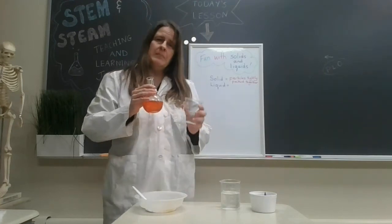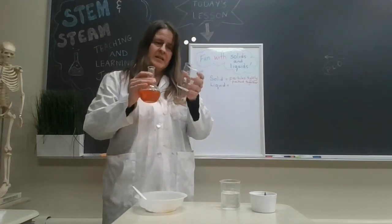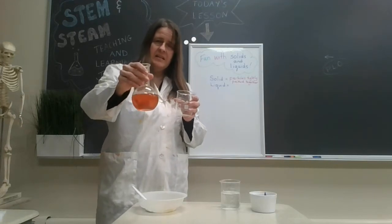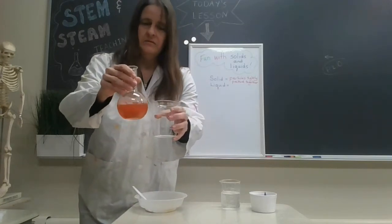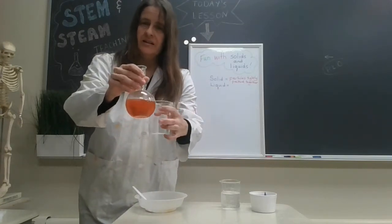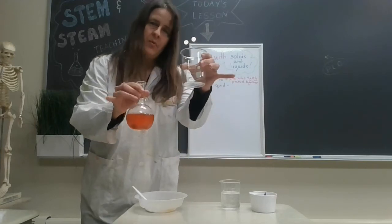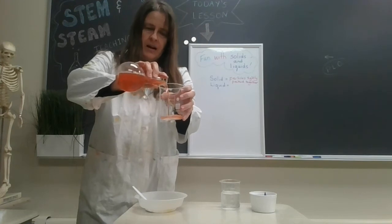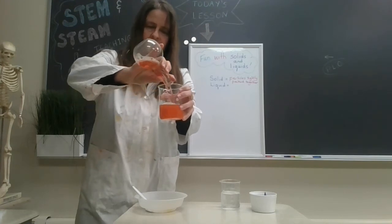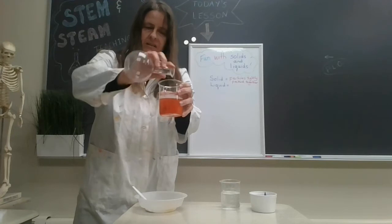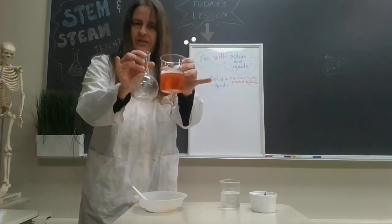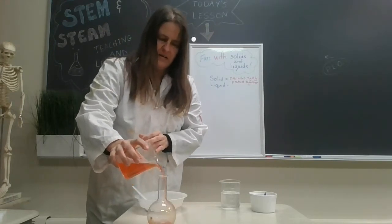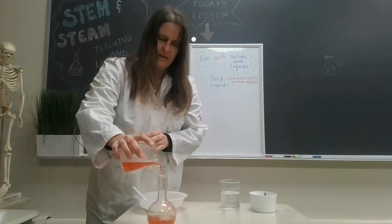And the other thing that people use to define a liquid is they say that liquids take the shape of their container. In this case, this is in a spherical shape right now. This liquid, it's in a special kind of flask. I'm going to pour it into this beaker, which is a cylindrical shape. And if you take a look at it now, it's the same liquid but its shape has now changed. And that is because liquids don't really keep their own shape.